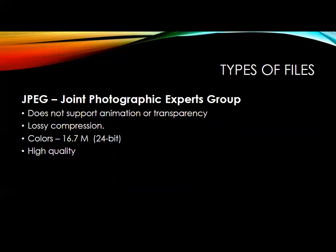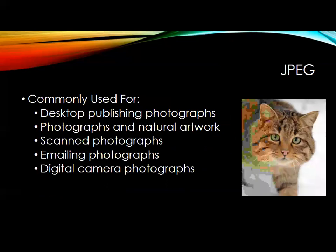JPEG stands for Joint Photographic Experts Group. It does not support animation or transparency, uses lossy compression, supports 16.7 million colors at 24-bit, and is high quality. Commonly used for desktop publishing photographs, natural artwork, scanned photographs, emailing photographs, and camera photographs. These are basically the images you take — pictures you take on your phone, for instance.